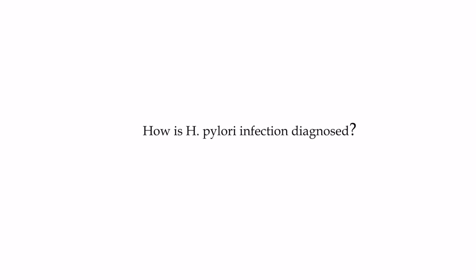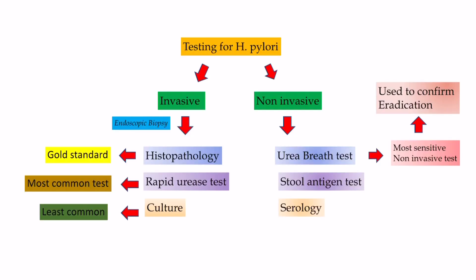How is H. pylori infection diagnosed? H. pylori infection can be diagnosed by histologic evaluation of gastric biopsies and the rapid urease test on fresh biopsies. Culture of H. pylori is not routine — it is usually reserved for recurrent infection and antibiotic sensitivity testing when second-line therapy has failed.